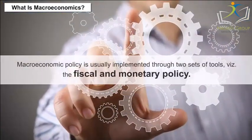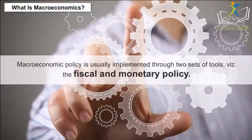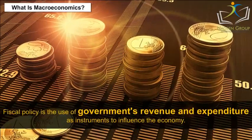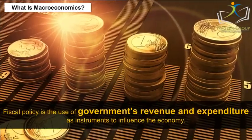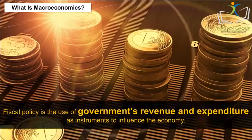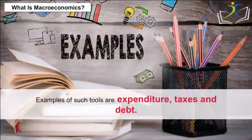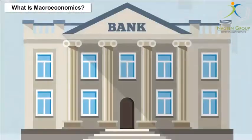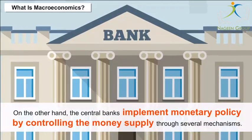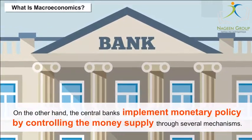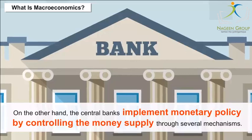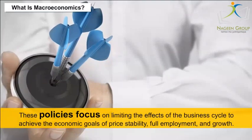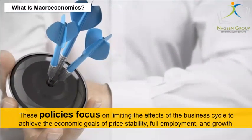Macroeconomic policy is usually implemented through two sets of tools: fiscal and monetary policy. Fiscal policy is the use of government revenue and expenditure as instruments to influence the economy — examples include expenditure, taxes and debt. On the other hand, central banks implement monetary policy by controlling the money supply through several mechanisms. These policies focus on limiting the effects of the business cycle to achieve price stability, full employment and growth.